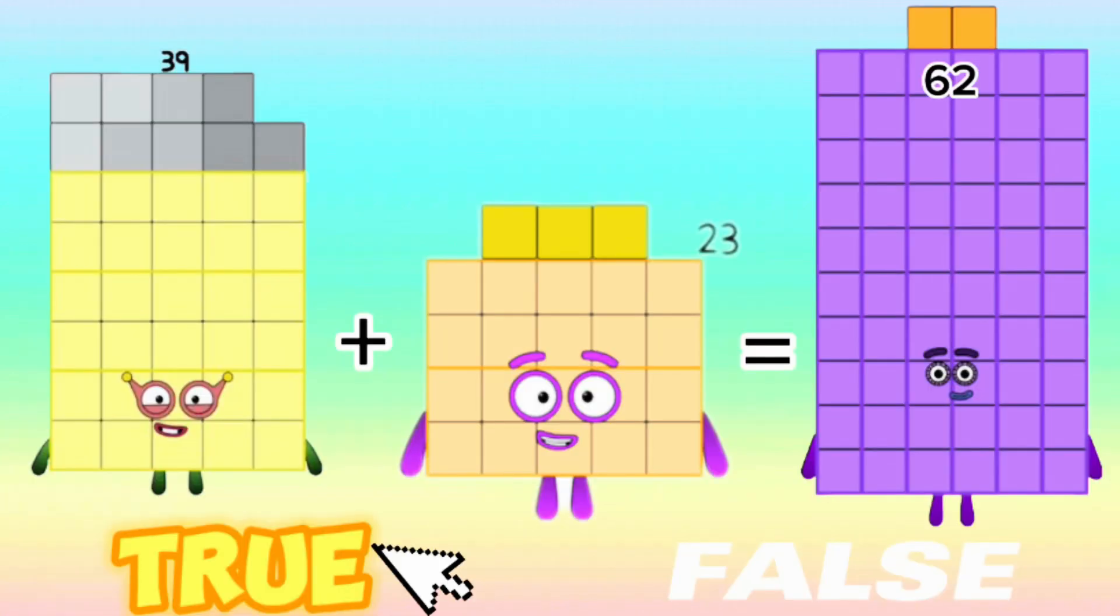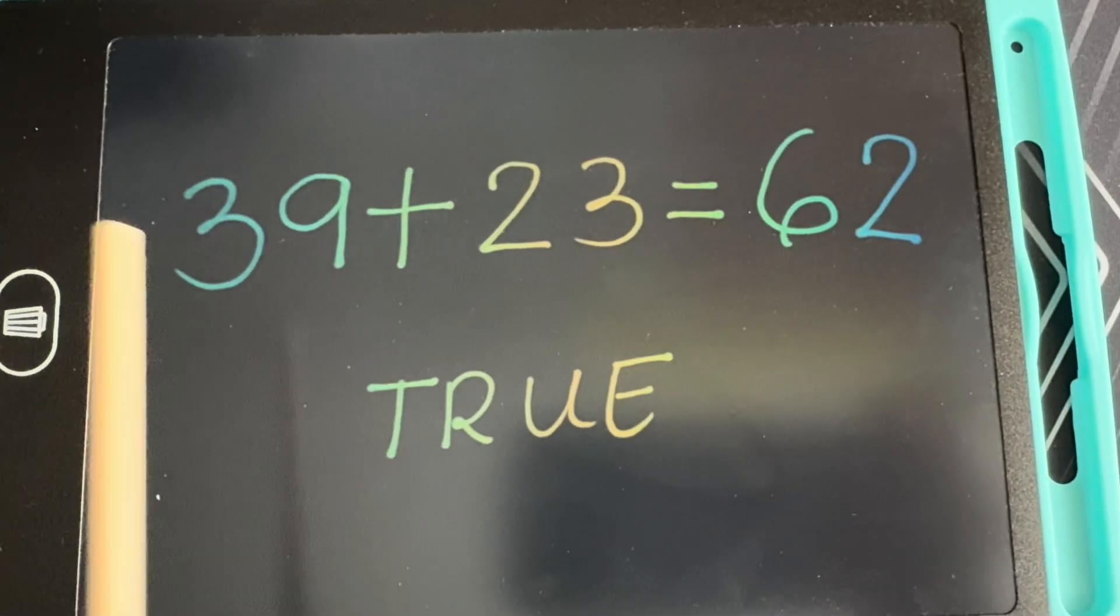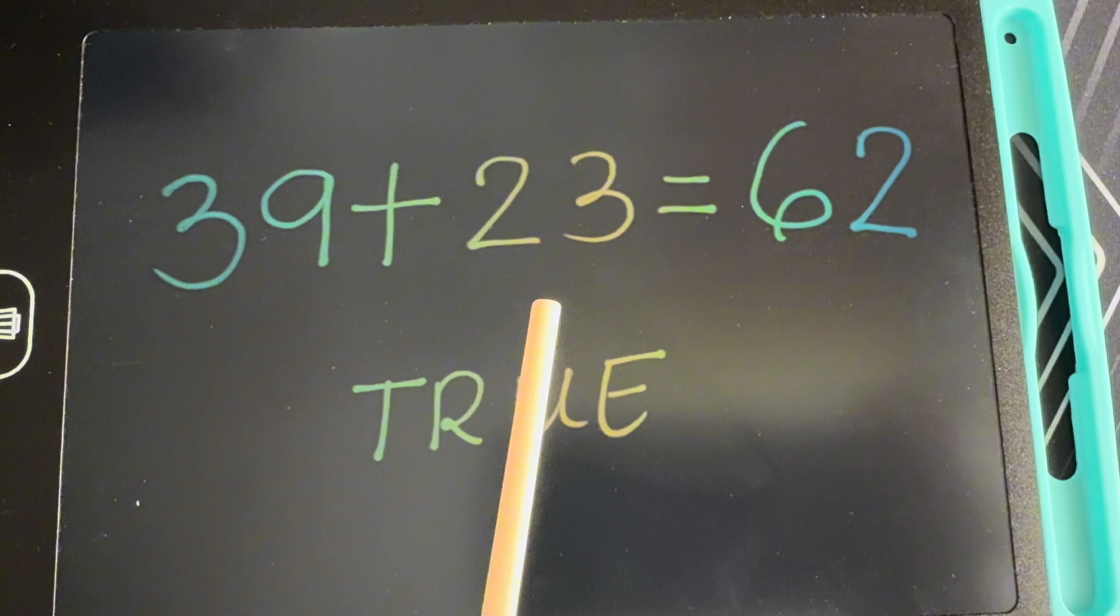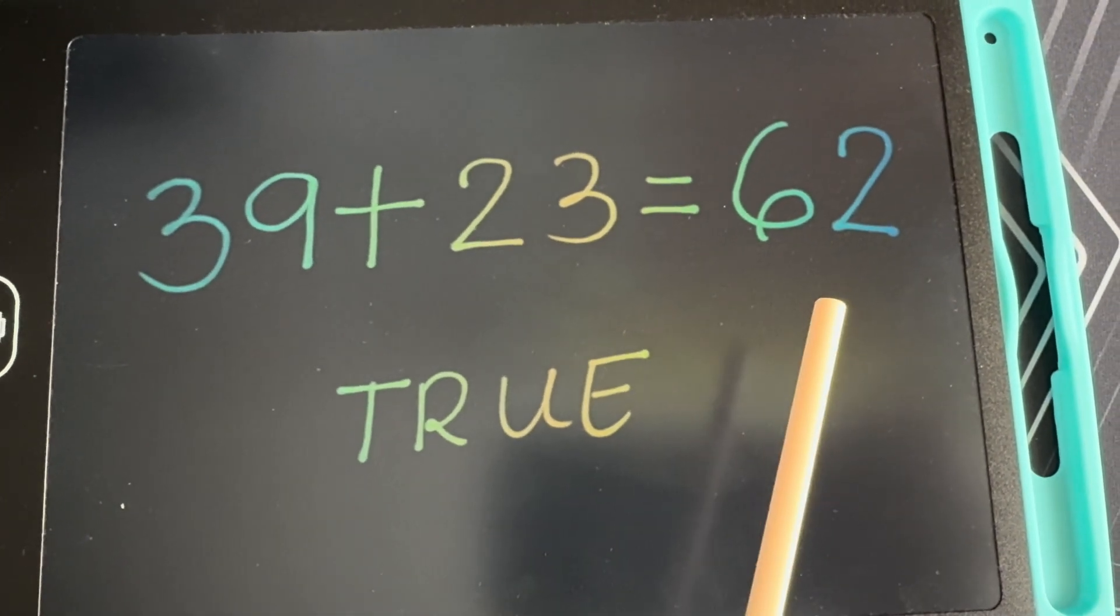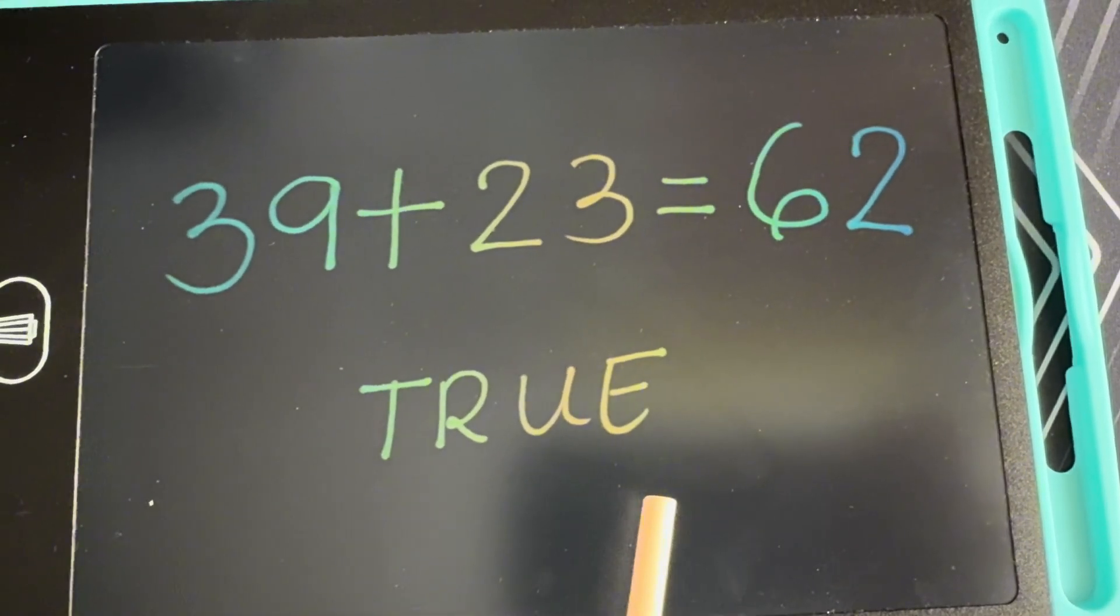39 plus 23 is equals to 62. And it's true. And again, 39 plus 23 is equals to 62. And it's true.